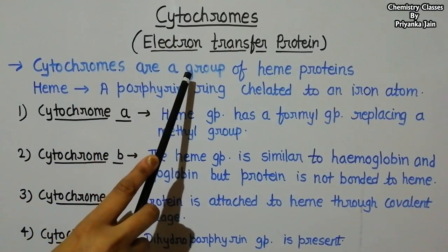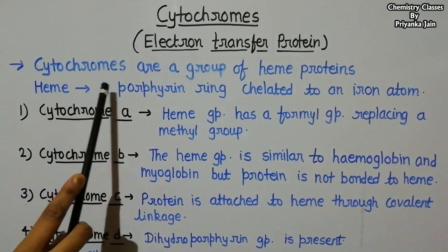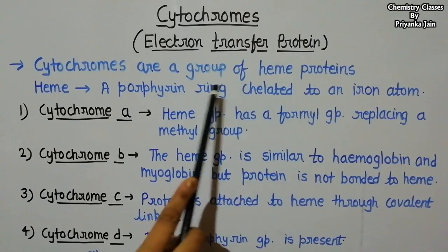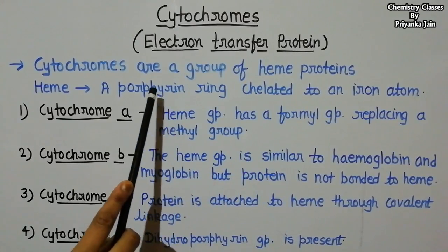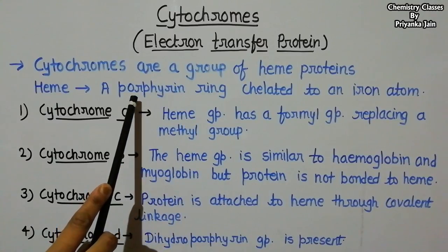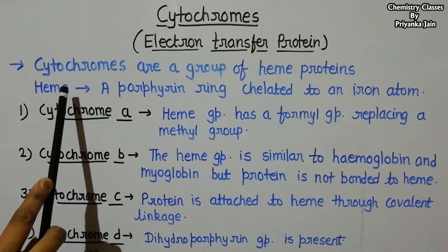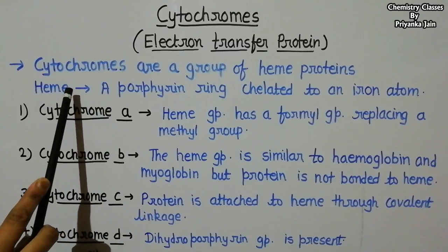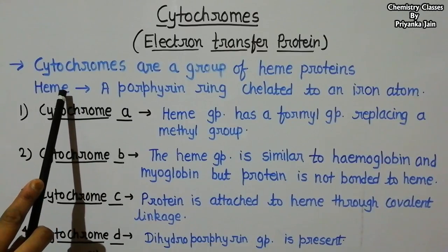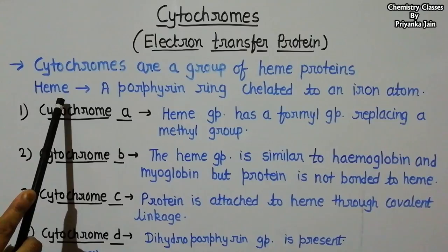Cytochromes are a group of heme proteins. Heme is a porphyrin ring chelated to an iron atom — an iron atom is present at the center of the porphyrin ring. For more detail on the porphyrin ring and the structure of heme, you can see our video on hemoglobin, where I have described the heme group in detail.